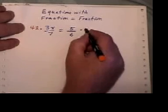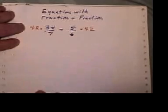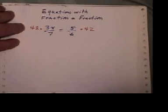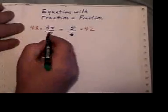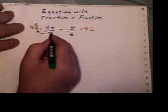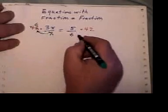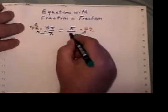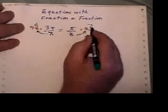So we'd start off by multiplying both sides of the equation by 42. When we do that, then we say 7 goes into 42 six times, 6 goes into 42 seven times.